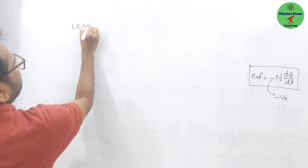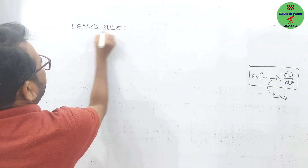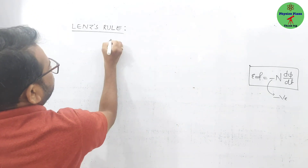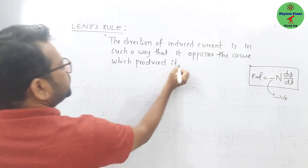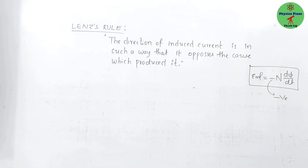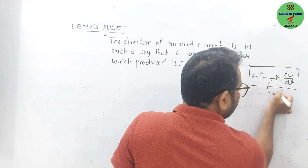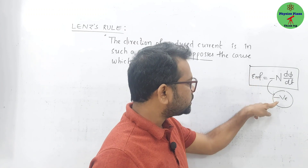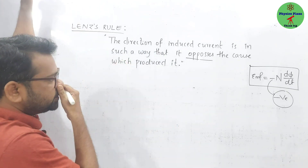First we'll discuss Lenz's rule — it's very simple, don't make it complicated. According to Lenz's rule, the direction of induced current is in such a way that it opposes the cause which produced it. That is the reason the negative symbol is taken in the formula — this EMF is opposing the rate of change of magnetic flux.